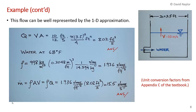So we can use our one-dimensional approximation: Q equals VA. V is the rising liquid water level at 10 inches per second. We need to convert that into feet per second, so we divide by 12, giving 10/12 feet per second. Then we multiply by the cross-sectional area of the circular tank: pi times 3.5 squared over 4. That gives us a volume flow rate of just over 8 cubic feet per second.